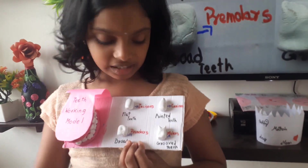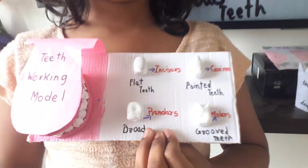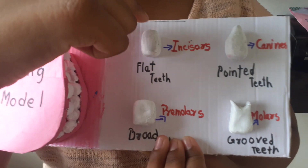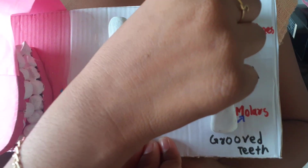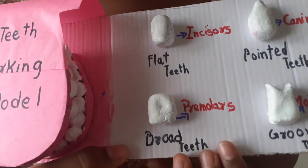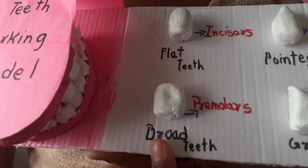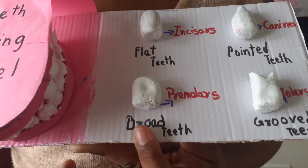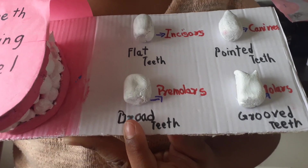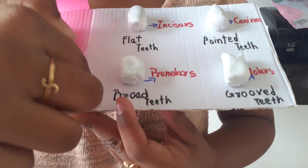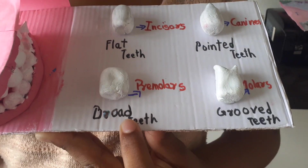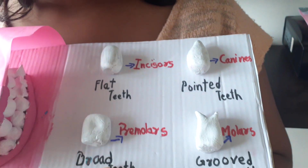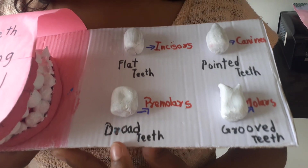Flat teeth will have a flat surface on the tip of the teeth — it is called flat teeth. Pointed teeth will have a sharp tip — it is called pointed teeth. Broad means having more breadth; teeth which have more breadth are called broad teeth. Grovel teeth means a tooth which will have a groove on the tip of the teeth — it is called grovel teeth.